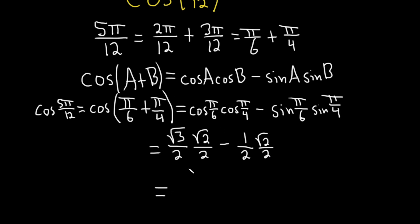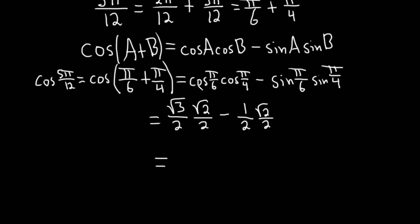Then you can multiply straight across. 3 times 2 is 6, you can keep that in the square root. And then 2 times 2 is 4. Minus, 1 times the square root of 2 is the square root of 2. And on the bottom, 2 times 2 is 4.